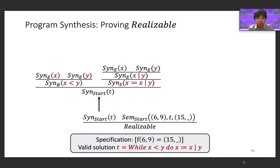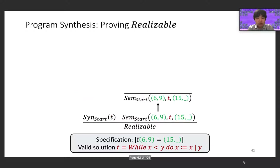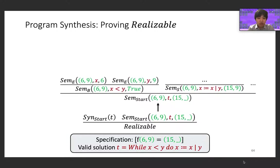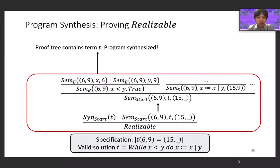After proving that T is a valid term, we also need to prove that T has the correct semantics, expressed by the second premise using the semantic relations and the specification. The proof for the semantic premise semStart proceeds similarly by applying the semantic rules—the CHCs—given as semantics in the SemGUS problem. For example, since the outermost production of T is a while loop, we apply the CHCs specified for while loops as the first step. This tells us that T executed on input x→6, y→9 results in an output state where x→15, as required by our specification. Once we've generated a valid proof tree, it contains the synthesized term T, which can be recovered by traversing the syntax rule applications. This proves how solving a query over CHCs corresponds to program synthesis, and in practice CHC solvers such as Spacer can automatically generate a proof tree.